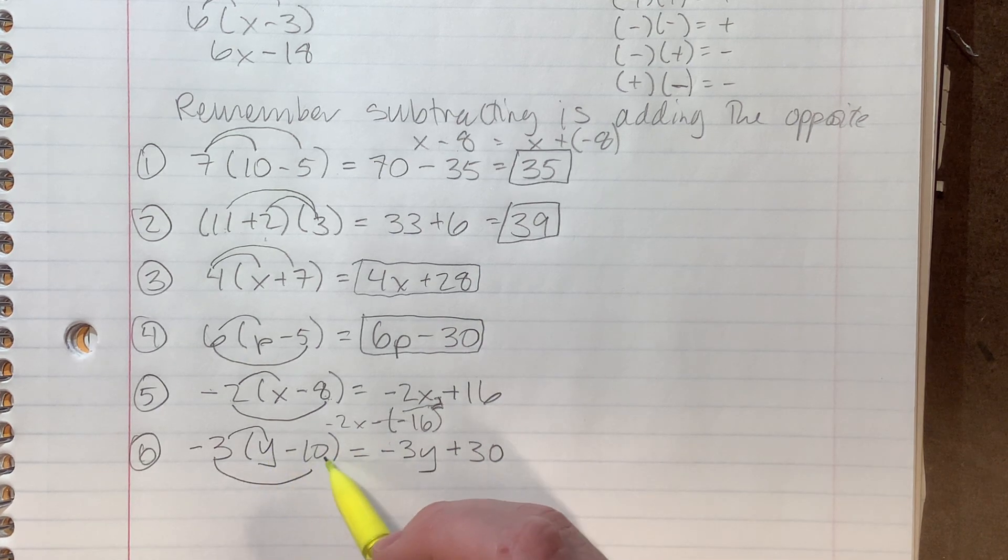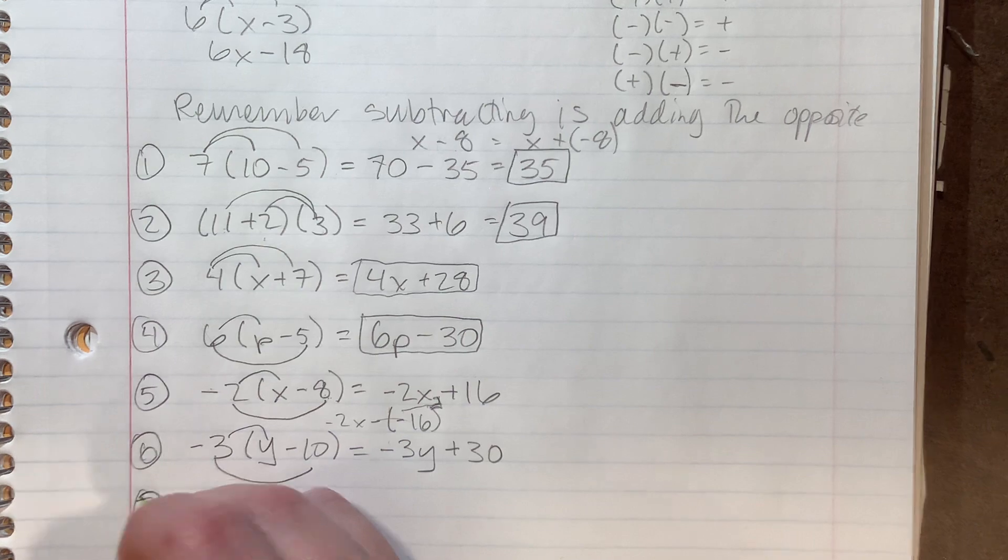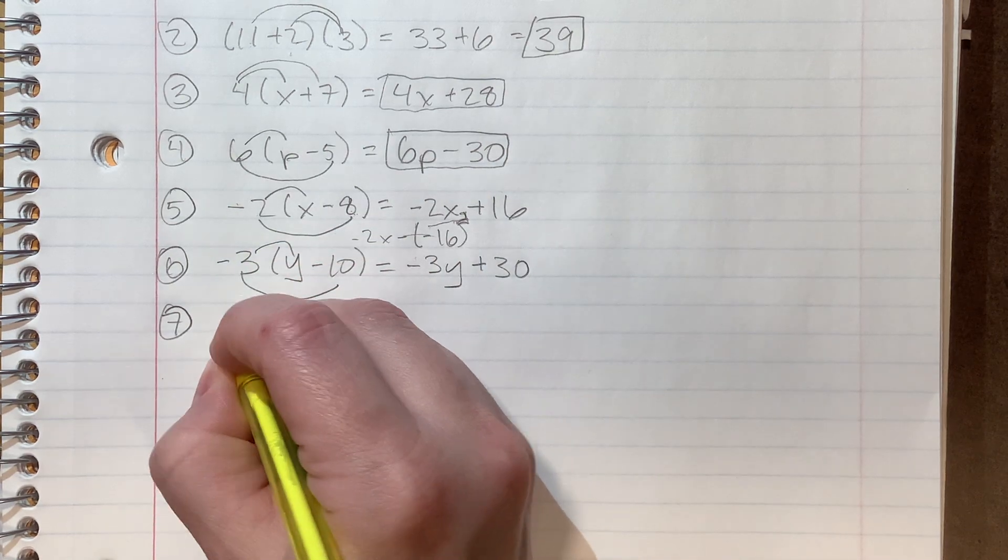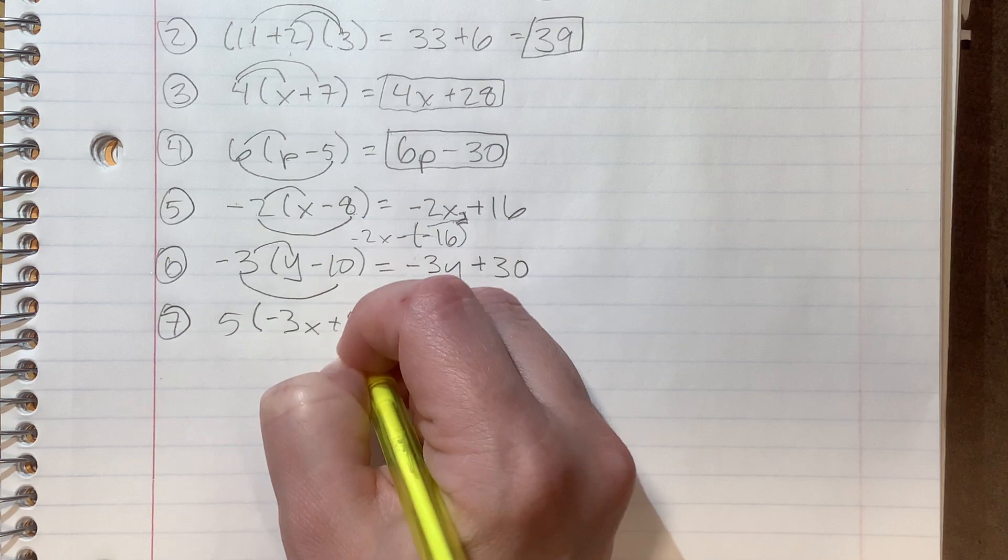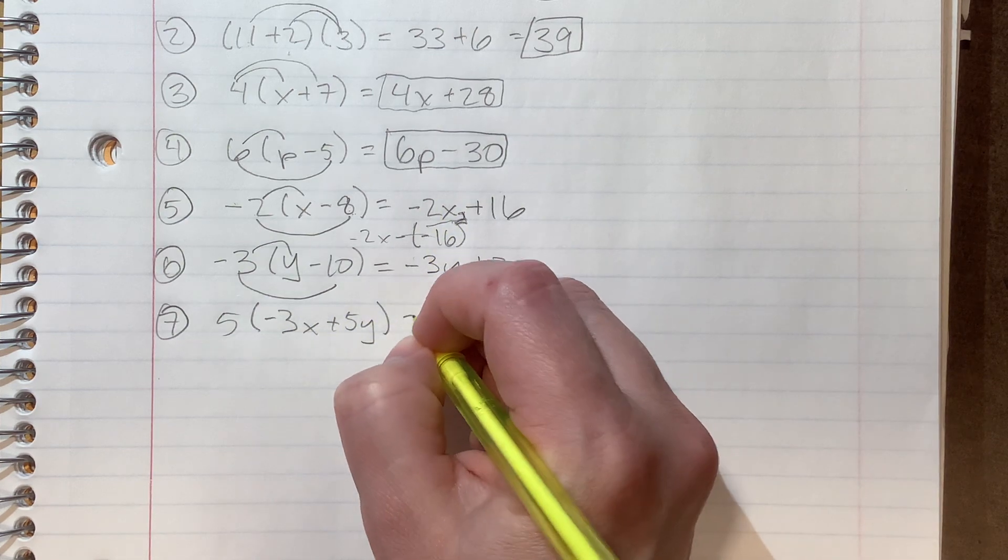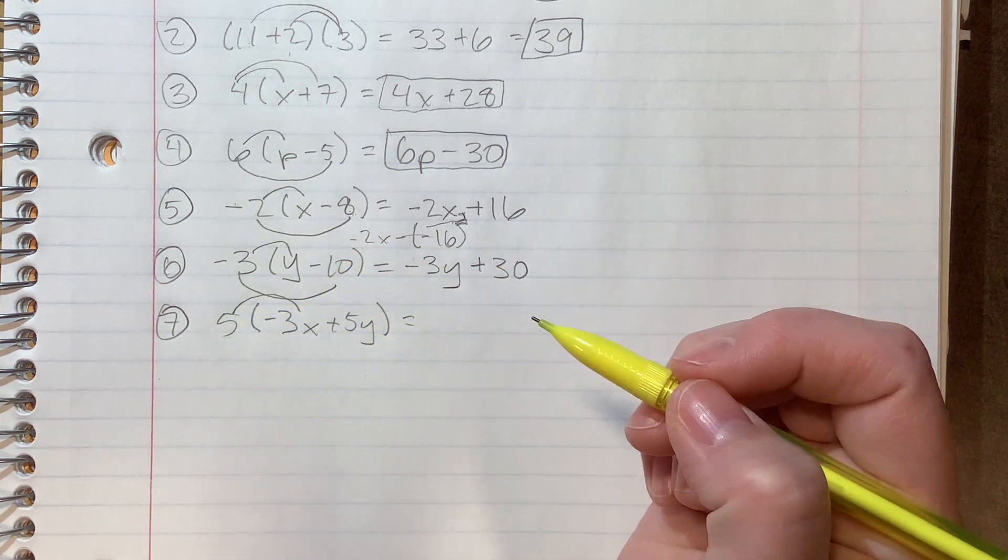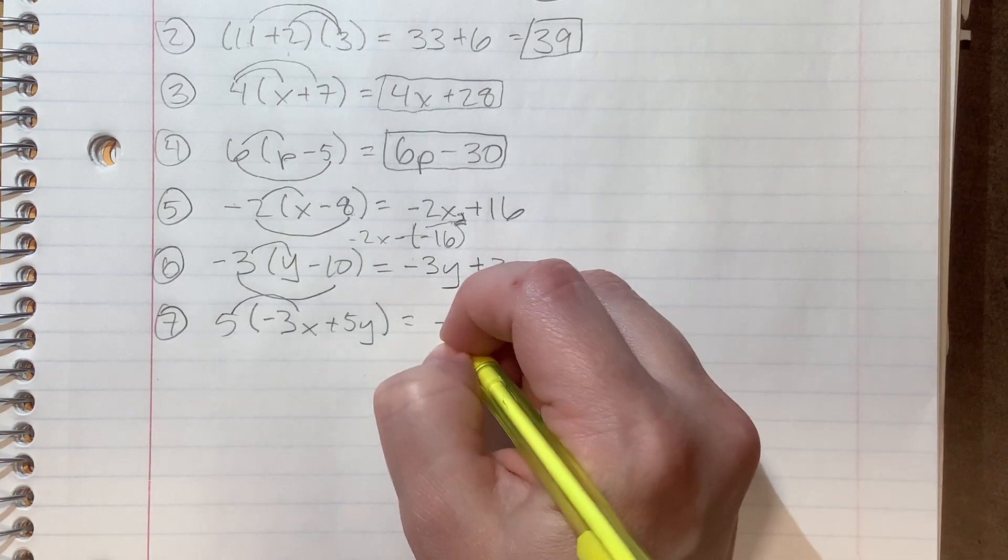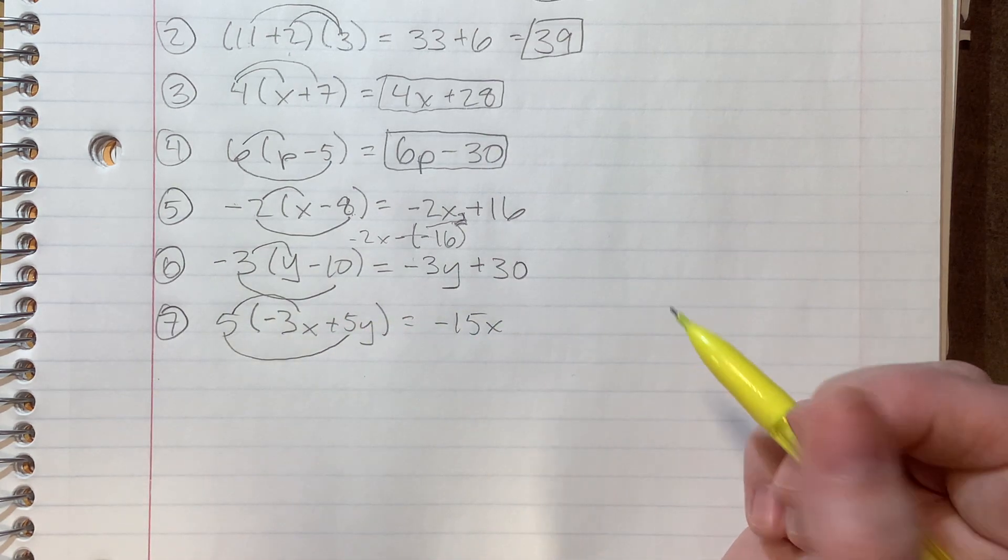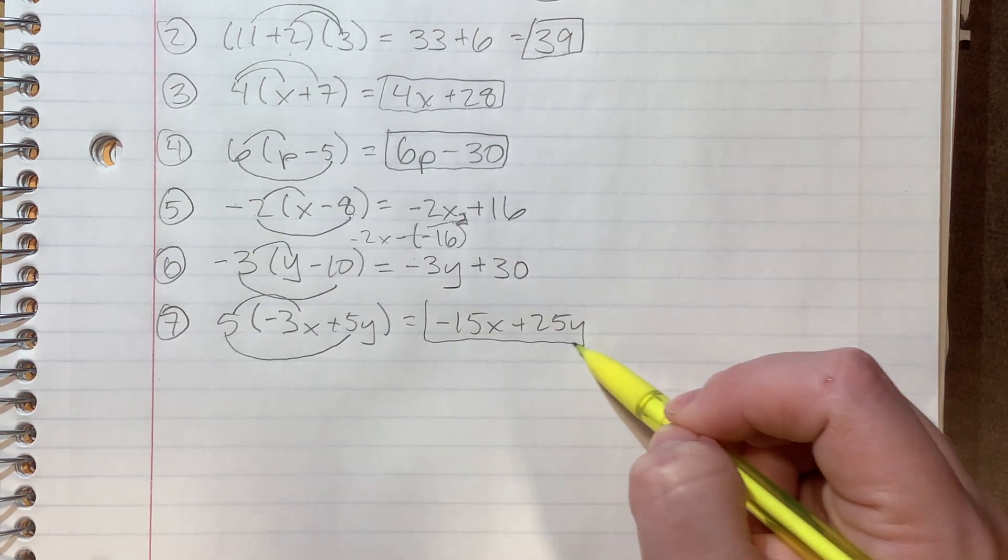We can actually have two variables and we can have those variables have coefficients. So numbers in front of them, which means we're going to be doing even more multiplying. So what this might look like, we have five times negative three x plus five y. And we're just going to multiply the numbers and the numbers, keeping the variables. So we do five times negative three x. So that's five times negative three, which is negative 15 and keep the x. And then we'll do five times five y. Five times five is 25 and we keep the y. Distributive property.